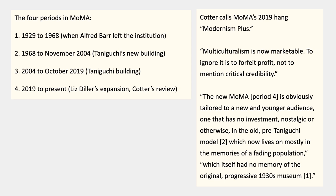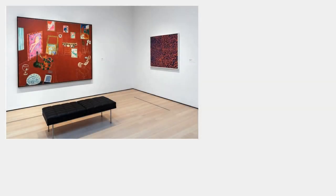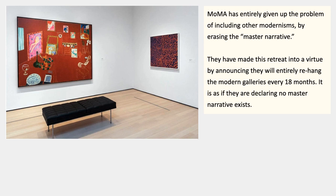So there's in a nutshell, in Cotter's view, the good outcome of getting rid of the narrative that had been the central purpose of MoMA to promote for so many years — by returning to its roots, as it were. MoMA has entirely given up the problem of including other modernisms by erasing their narrative, which allows anything to be included. They've made this into a virtue by announcing that they're going to entirely rehang the modern galleries every 18 months, so that even if there was a residue of the older narrative, it would presumably be destroyed by successive rehangs every year and a half.